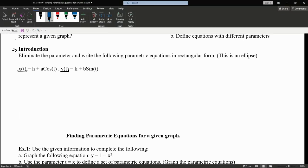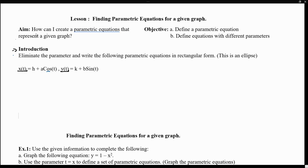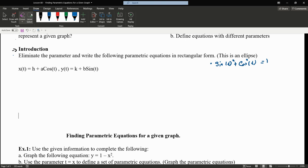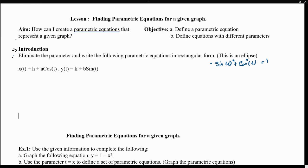Recall that if your parametric equation is given in terms of sine and cosine, we will be using the trigonometric identity which says that sine squared plus cosine squared equals 1. So therefore, if you want to use this identity, it would be a good idea to solve for cosine on the x and solve for sine on the y.